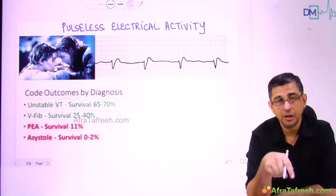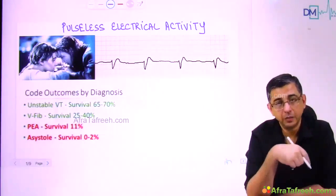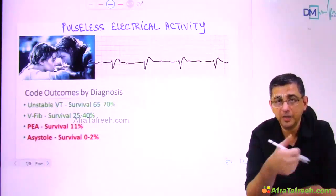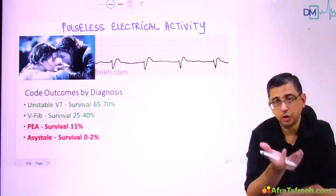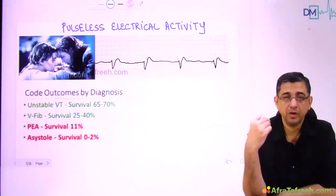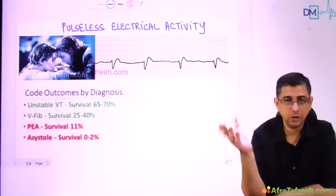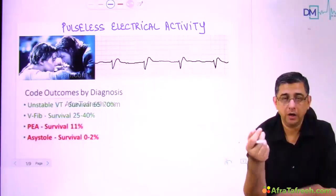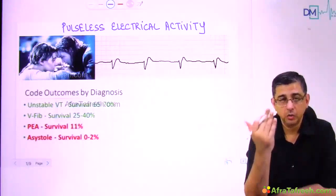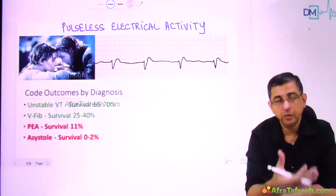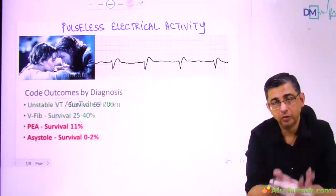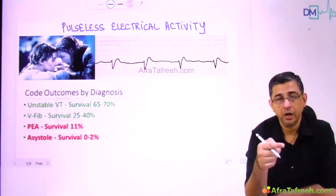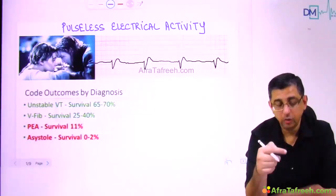Unless and until we find the cause, we will not be able to treat this condition. When I ask my students what is the treatment for pulseless electrical activity, I get answers ranging from DC shock to amiodarone to epinephrine or sodium bicarbonate. For this condition, the answer is none of those. We do not shock pulseless electrical activity. Causes could range from tension pneumothorax to cardiac tamponade — for tamponade you need pericardiocentesis, for pneumothorax you need wide bore needle decompression. Finding the etiology is what is very important.